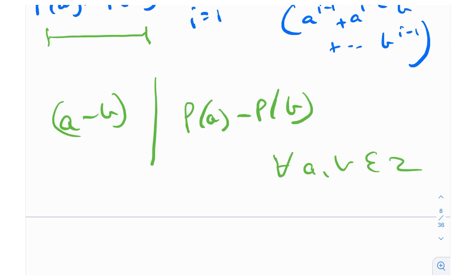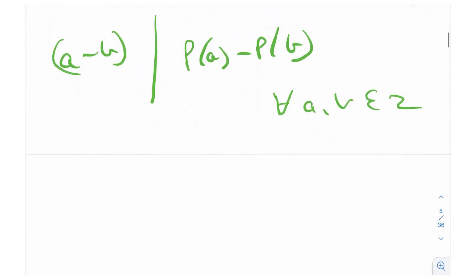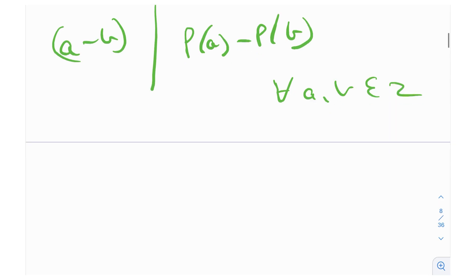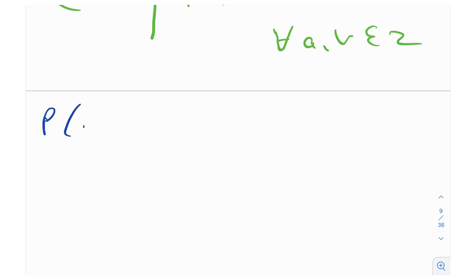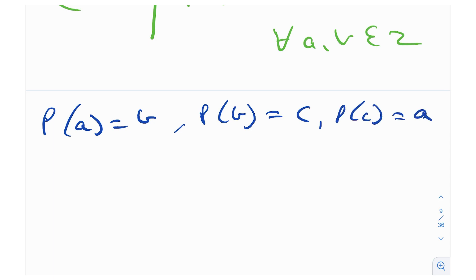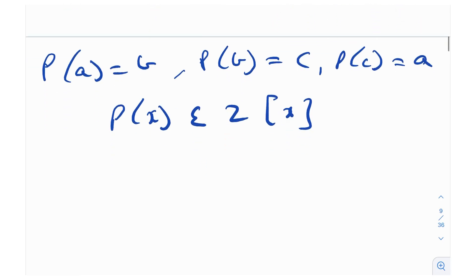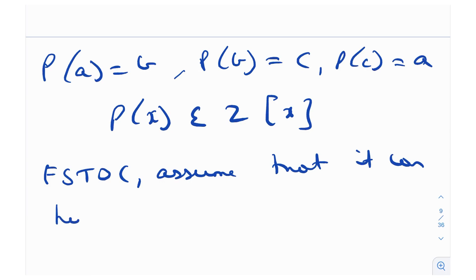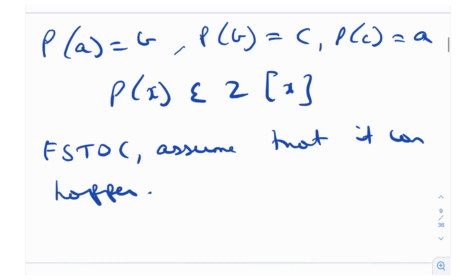Keep that result in mind — it's very important and we're going to use it extensively to prove the original problem. For the main problem, we need to prove it is impossible to have the cyclic structure p(a) = b, p(b) = c, p(c) = a. For the sake of contradiction, assume that it can happen. We will derive a contradiction and conclude that this cyclic permutation is impossible.